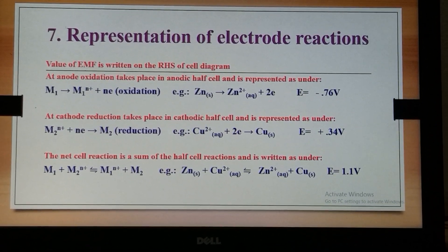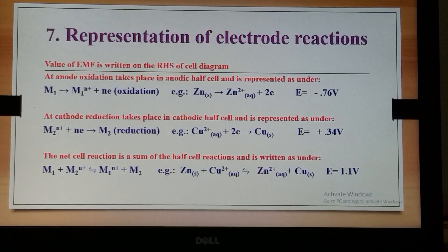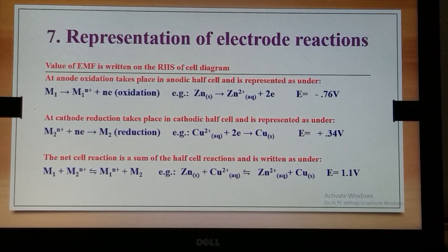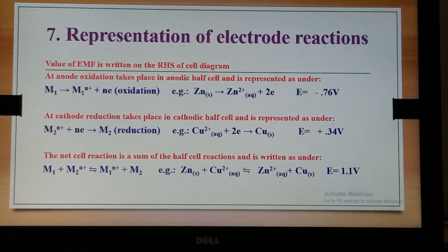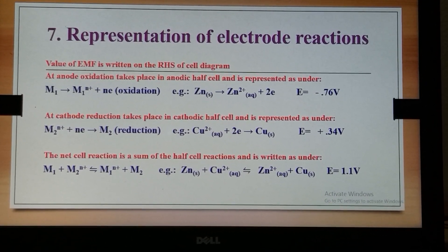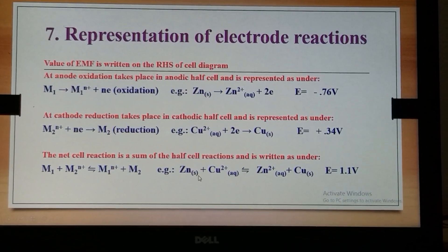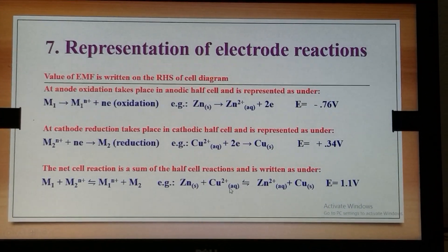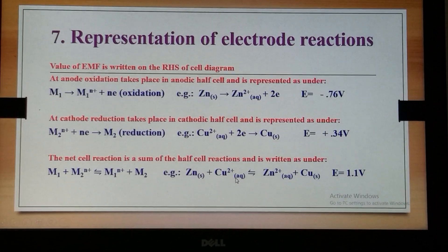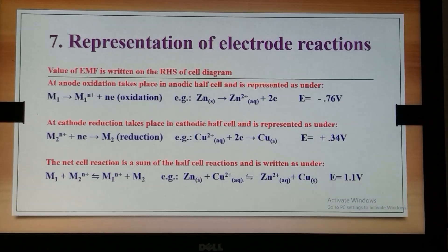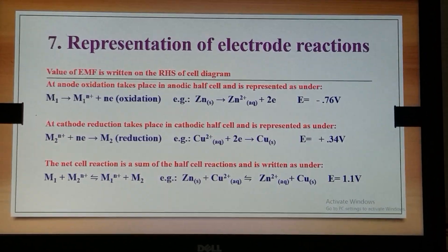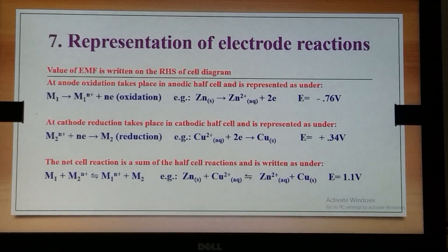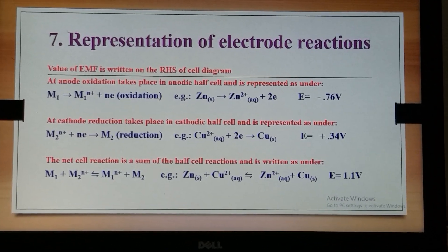The net cell reaction is the sum of both half cell reactions — the anodic and cathodic — and is represented as: zinc reacts with copper ions to give zinc ions and copper.